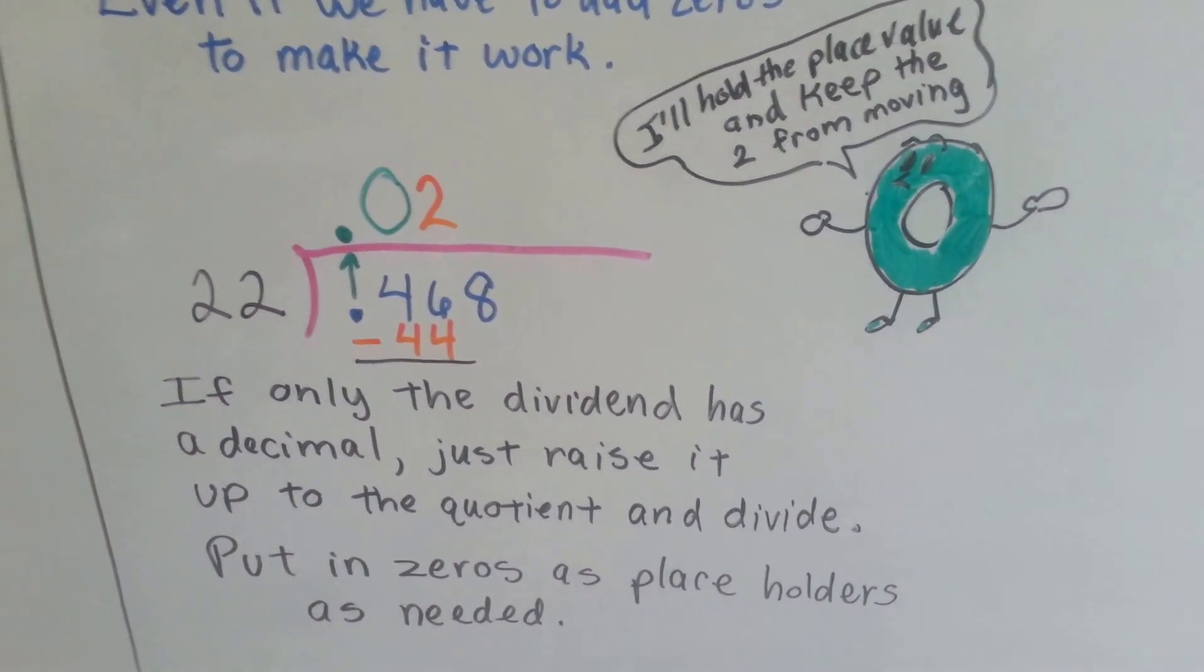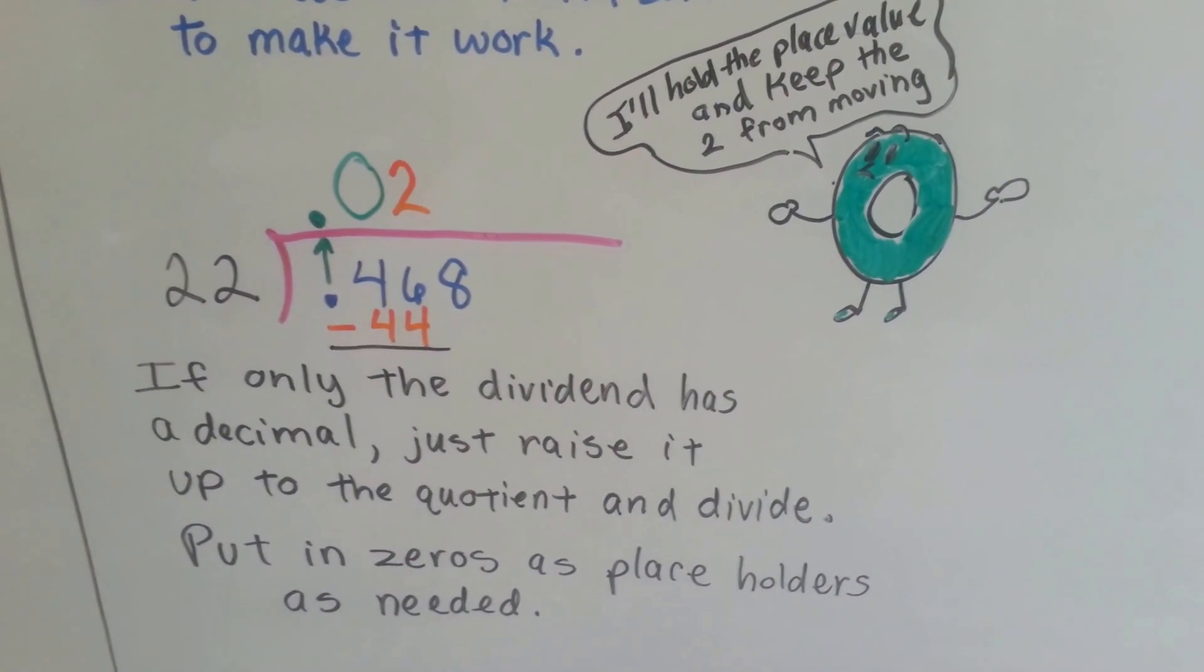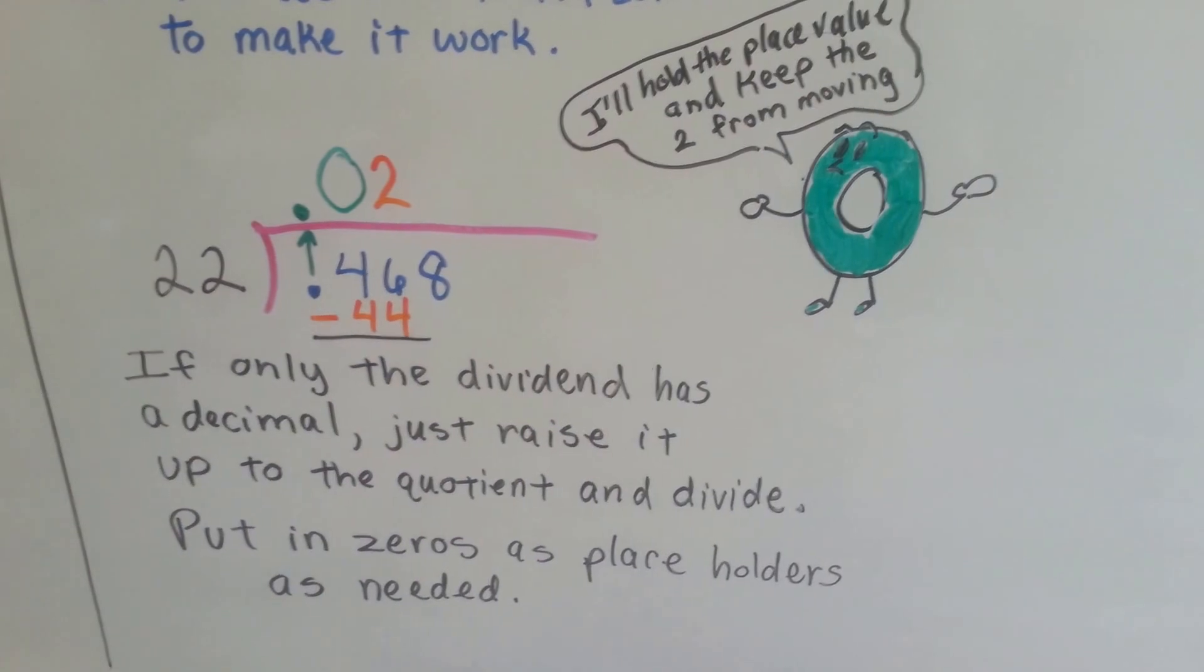So there would be an empty space in between the two and the decimal point going straight up. We put a zero there to hold the place. They love being a placeholder. That's their job. They don't feel needed if they're not holding a place, okay? So just put a zero there and we'll be fine.